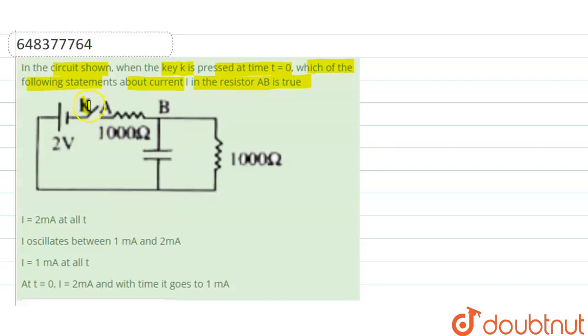We can see here there is a battery, there is a switch, and there are two resistors and one capacitor in the circuit. Initially, suppose this capacitor is uncharged.